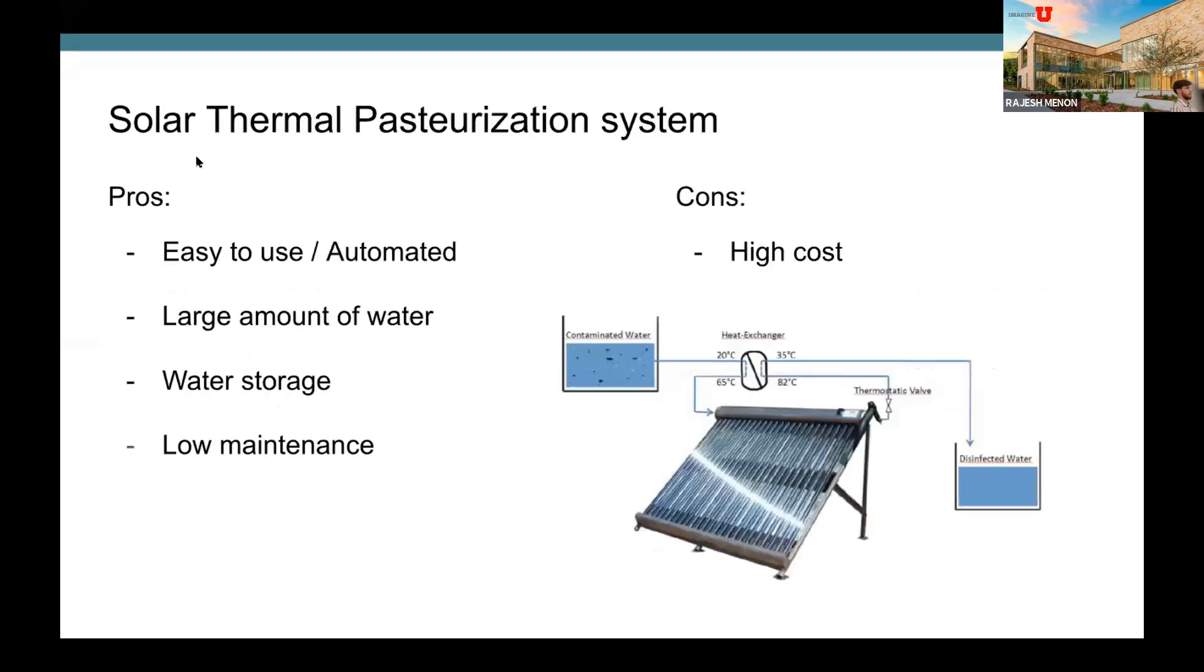Also, we have the solar thermal pasteurization system, and this is a good example for like villages and remote areas because it's easy to use, it's automated. And Jared also talked about it, you can install it in your home and stuff, but it also pasteurizes a large amount of water, and this is good for remote areas, and it also has storage and it requires low maintenance, but the main disadvantage is high cost. It depends on the size of the system. It varies from like a small system to a huge installation.